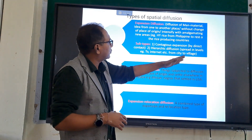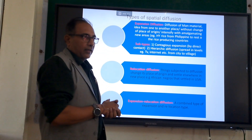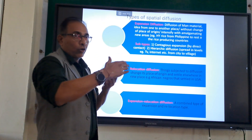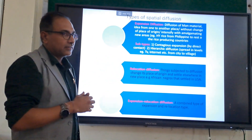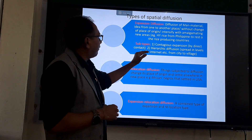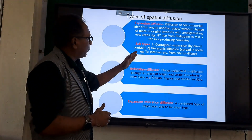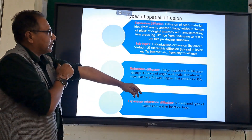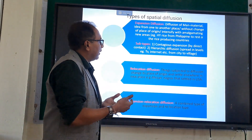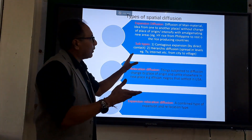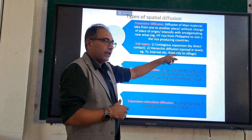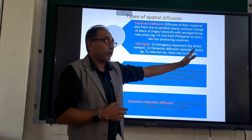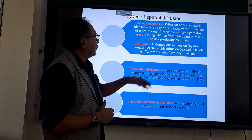Within expansion diffusion, there is contagious expansion by direct contact — for example, a disease diffused from a place of origin to another place by contact. There is also hierarchical diffusion, where things spread through levels, one hierarchy to another — for example, TV, which was initially diffused to the city, then switched to the town, and eventually entered the village. So you can find a hierarchy degree depending on the economy of a particular place.